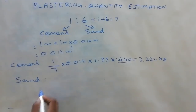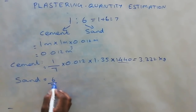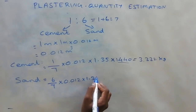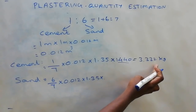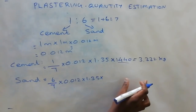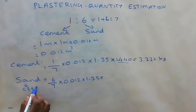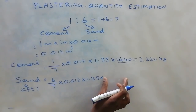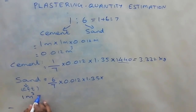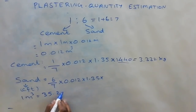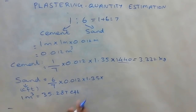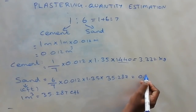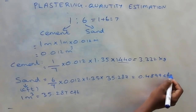Using the same method, we can calculate the same amount of cement. We require the density value and the CFT value. We get the sand in the market in CFT — cubic feet. The CFT value is equal to 1 m³ = 35.28 CFT. If you multiply, we will get the answer as 0.4899 CFT.